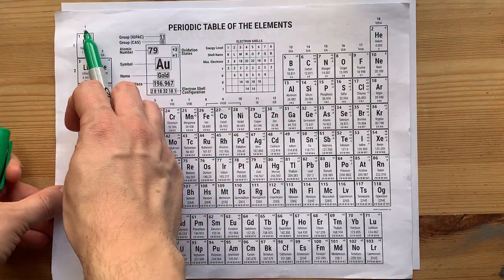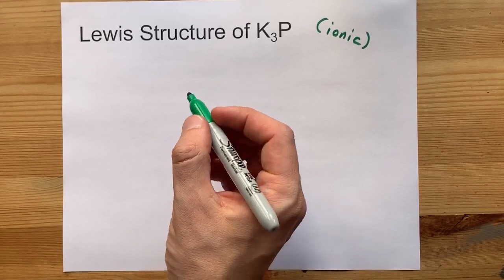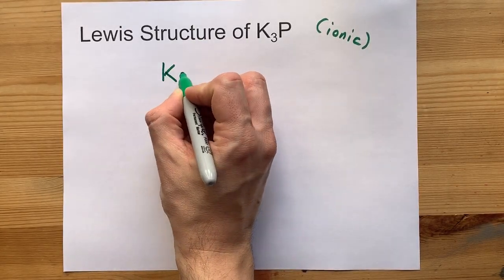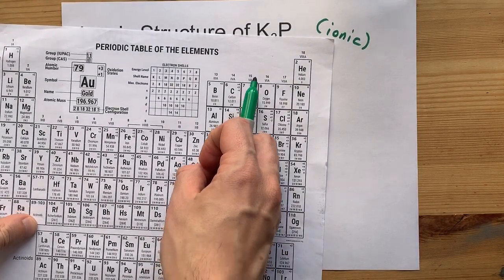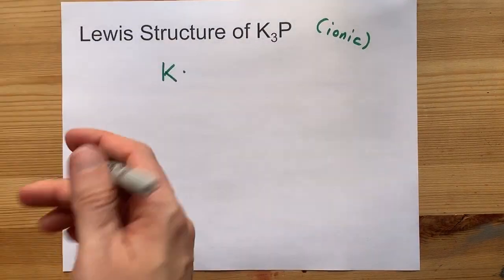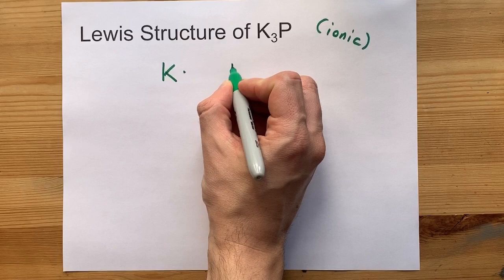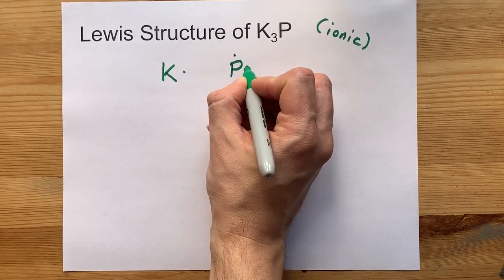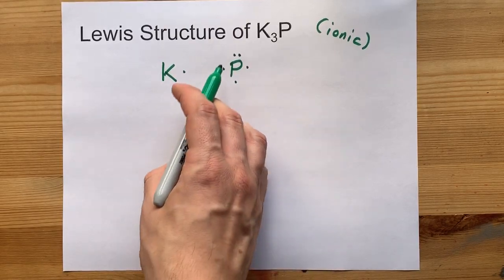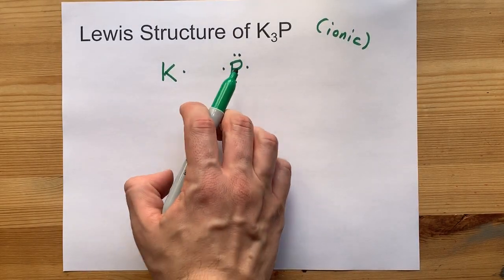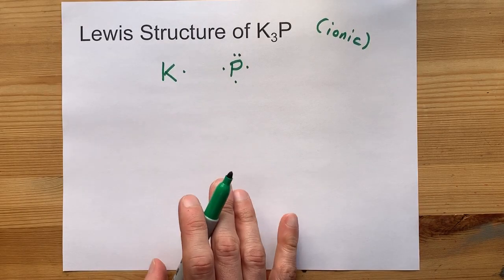Potassium is in group one so each potassium atom will bring one valence electron to the table. Phosphorus is in group 15 that means it has five valence electrons to start. One, two, three, four, five. Note that I spread them out before I started doubling them up north, east, south, and west.